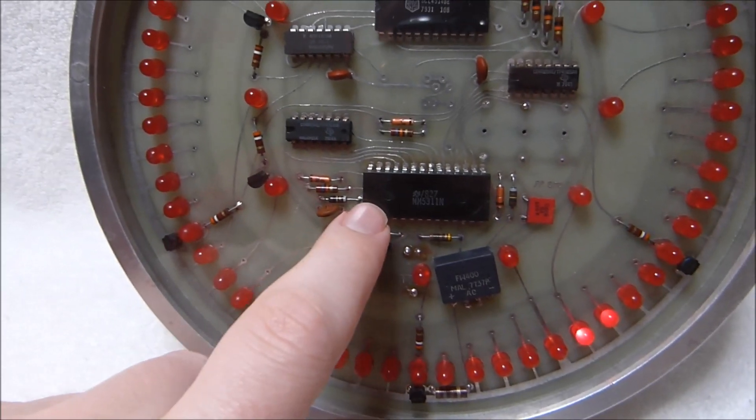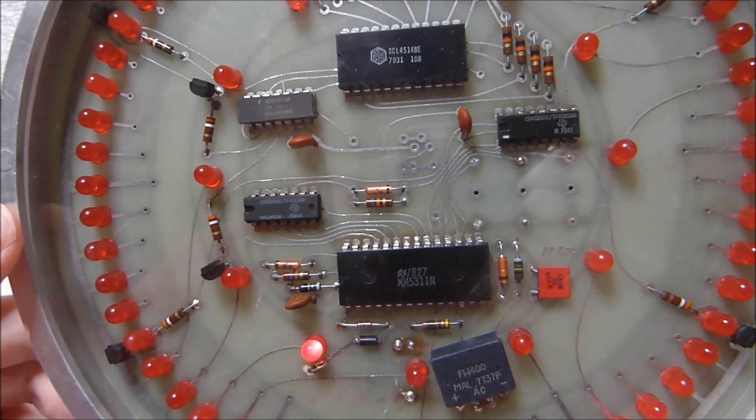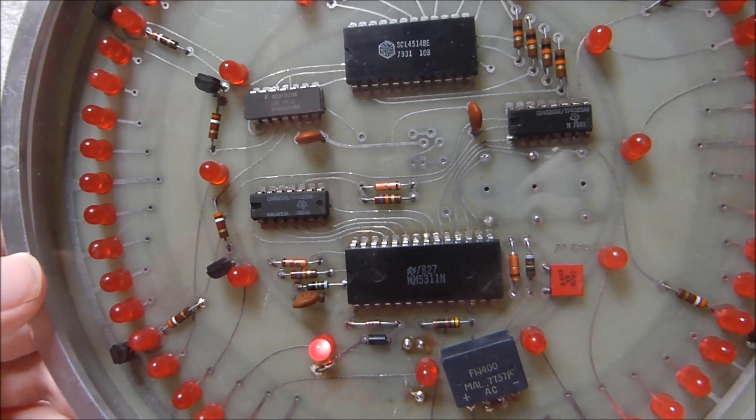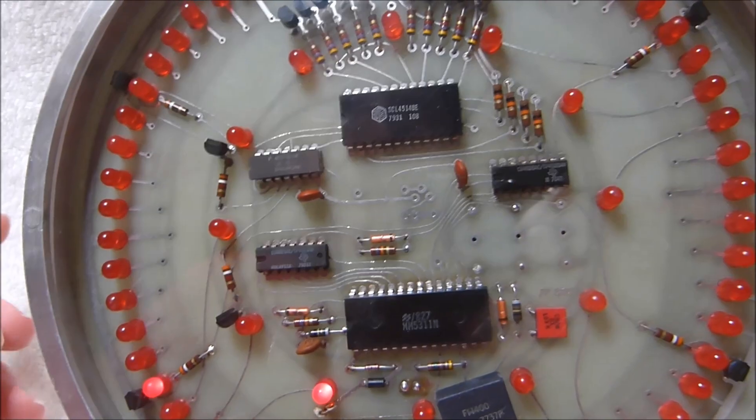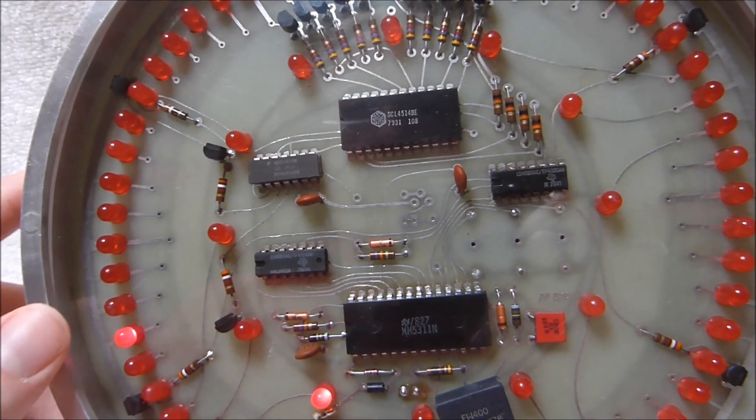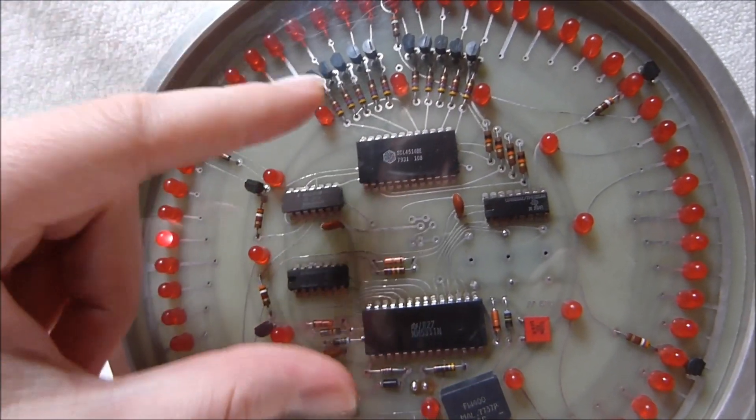At the heart of the clock is the MM5311 right there. That was made by National Semiconductor and it's a pretty basic clock chip which has BCD outputs, and then the rest of the circuitry here handles mapping that out to the ring of LEDs on the outside and the inner ring as well.